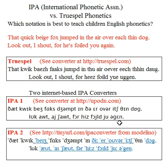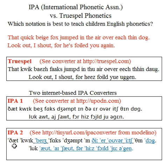Unfortunately, IPA 1 doesn't show the accents. There is one that does show the accents or stress patterns. IPA 2 from the Modellino converter does show the stress points, accent points, or emphasis points in the words.